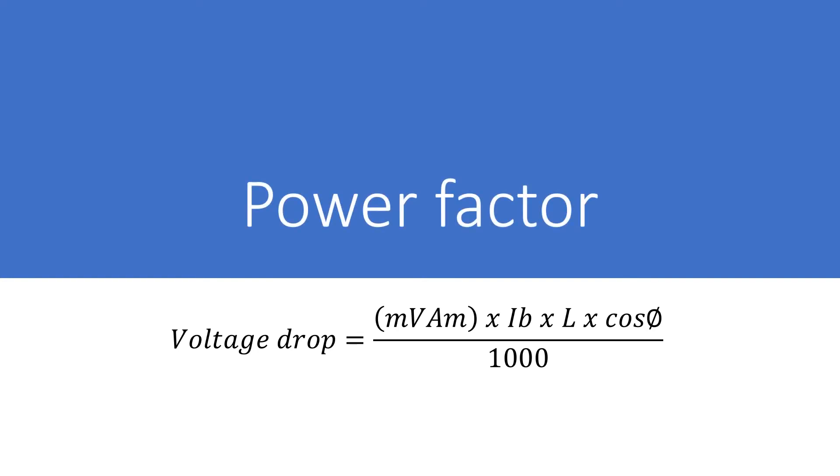So where the power factor is known for a circuit, we can take this into account in the voltage drop calculation. So the equation becomes voltage drop equals millivolts per ampere per meter multiplied by design current, multiplied by length, multiplied by power factor and then divided by 1000.